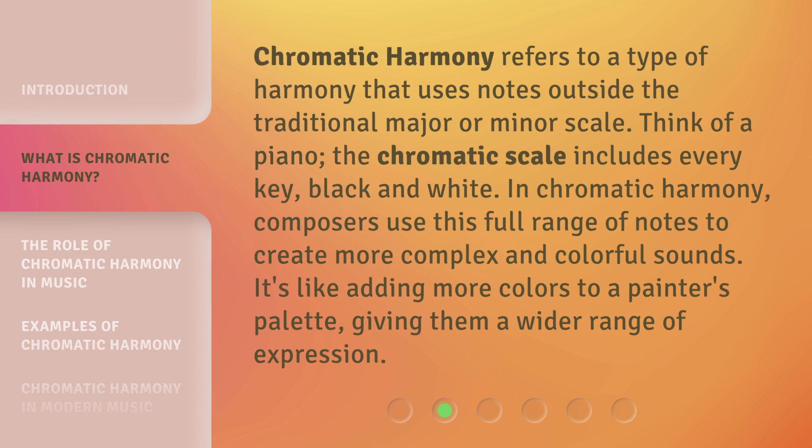Chromatic harmony refers to a type of harmony that uses notes outside the traditional major or minor scale. Think of a piano — the chromatic scale includes every key, black and white. In chromatic harmony, composers use this full range of notes to create more complex and colorful sounds.